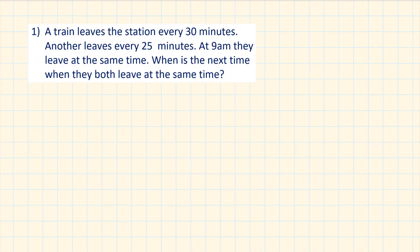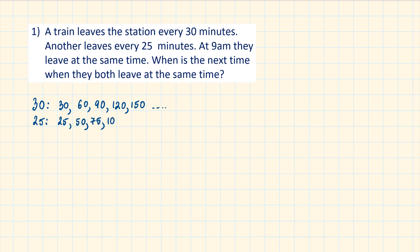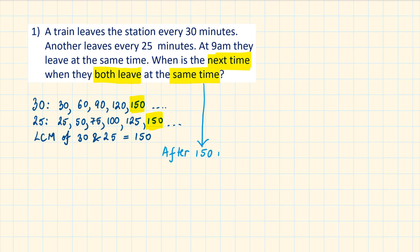A train leaves a station every 30 minutes; another leaves every 25 minutes. At 9am they leave at the same time. When is the next time they both leave together? The keyword 'every 30 minutes' tells us we're talking about multiples, so we use the LCM. Multiples of 30: 30, 60, 90, 120, 150... Multiples of 25: 25, 50, 75... The LCM is 150 minutes, which is 2 and a half hours. 9am plus 2.5 hours is 11:30am.